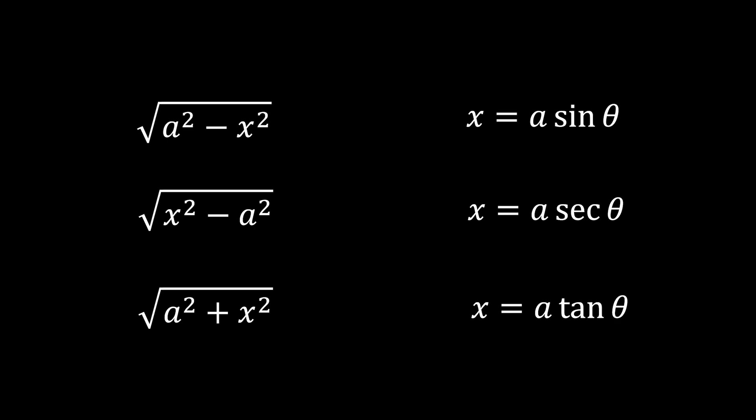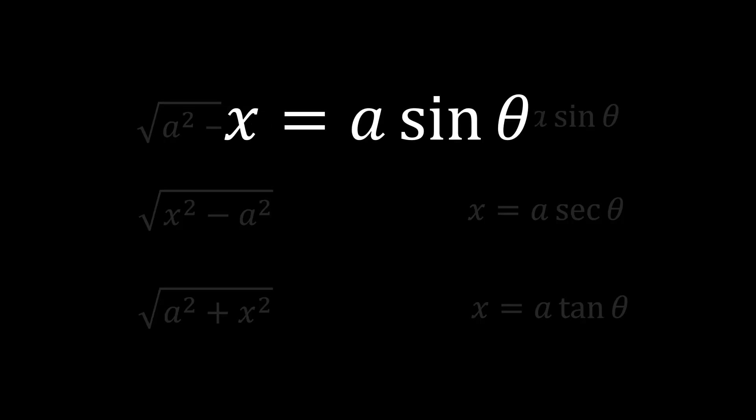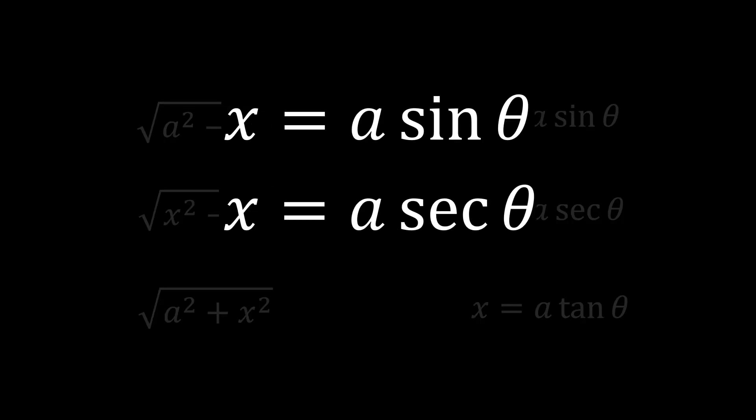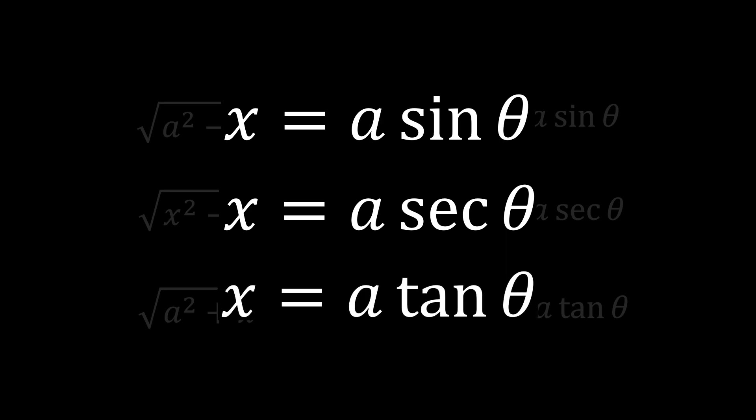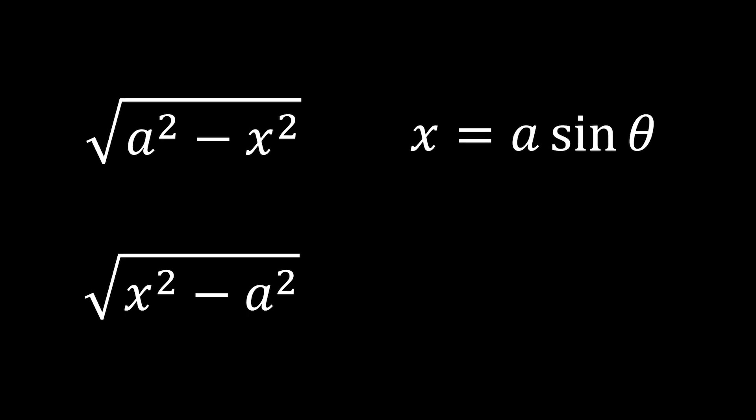These rules may seem complex at first glance, but all you need to remember is that for trigonometric substitution in integrals, you will be using sine theta, secant theta, or tangent theta depending on the situation. If there is a minus sign between a constant squared and x squared inside the square root, you can choose either sine theta or secant theta for substitution. So when do we use sine theta and when do we use secant theta?